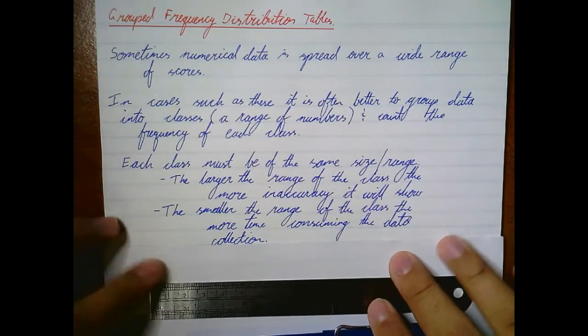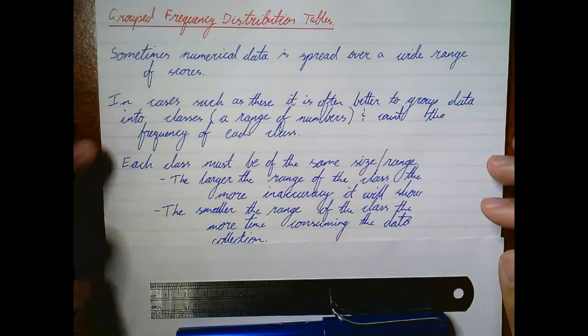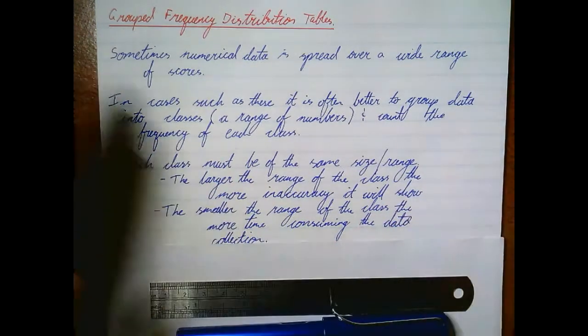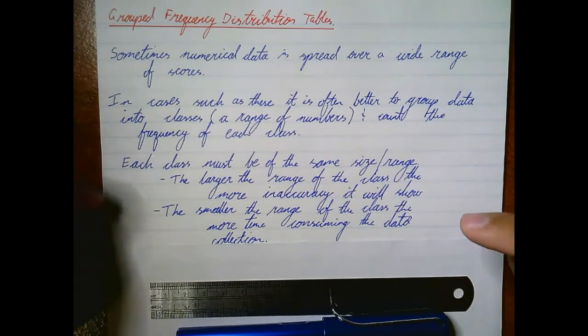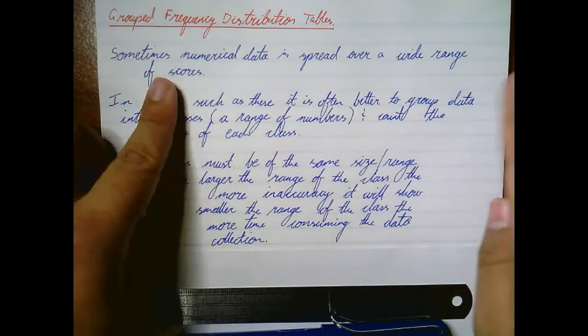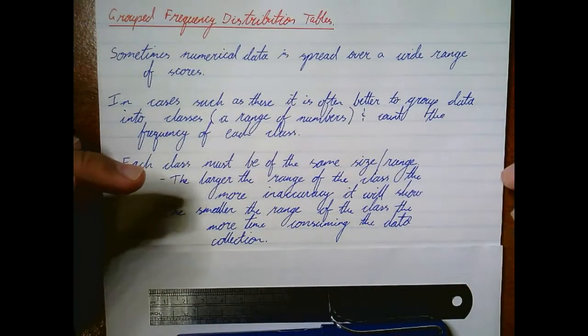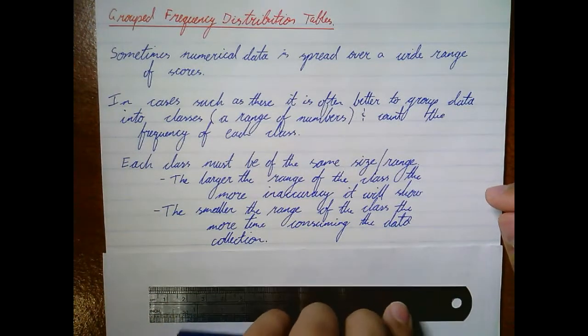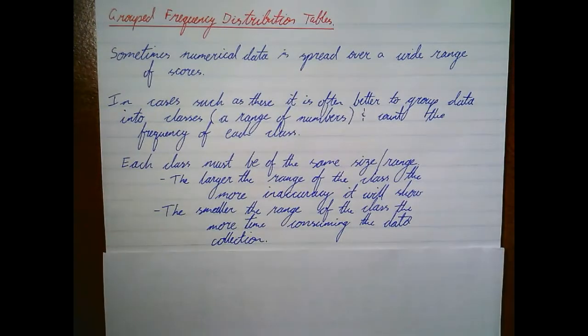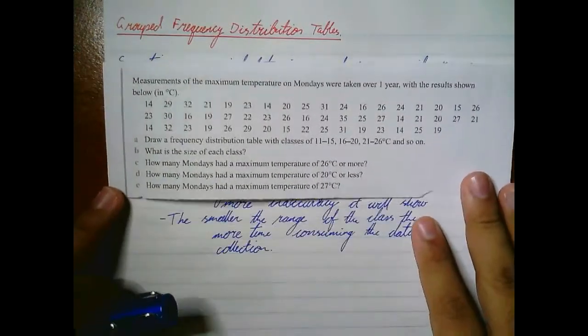Each class must be of the same size or range. The larger that we make the range, the more inaccuracy it will show when we analyze the data. Whereas if you make the range really small, it'll just be more time consuming and it defeats the purpose of having a grouped frequency table to begin with. It'll make a lot more sense once I've started doing this example here.